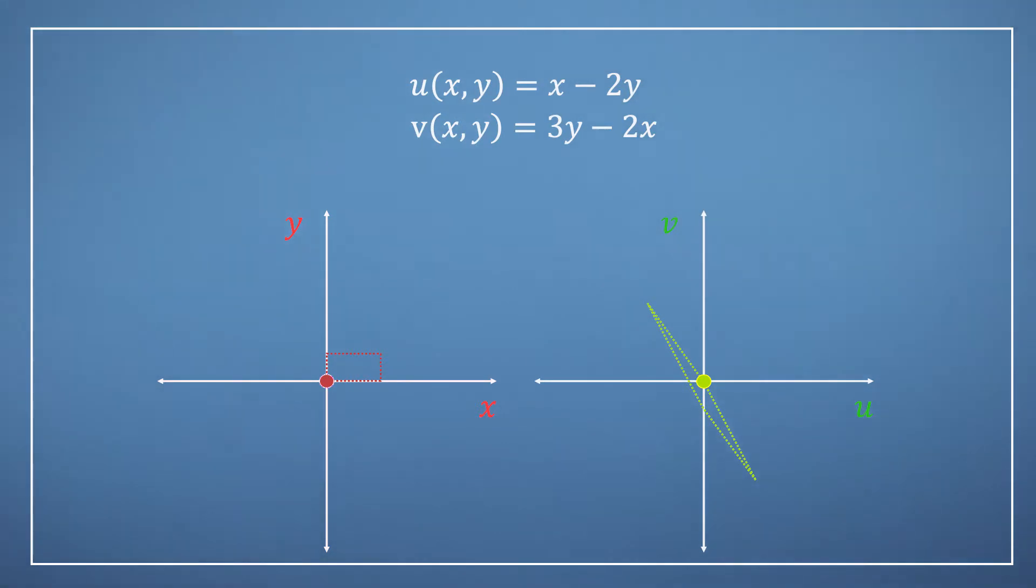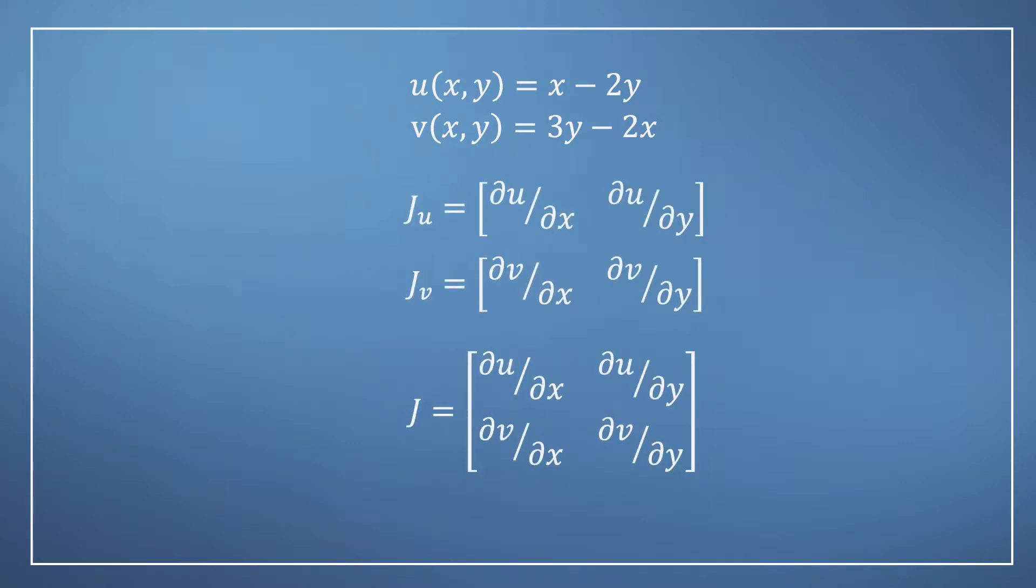For those of you familiar with linear algebra you may have guessed already where this is going. We can of course make separate row vector Jacobians for u and v. However as we are considering u and v to be components of a single vector it makes more sense to extend our Jacobian by stacking these vectors as rows of a matrix like this.